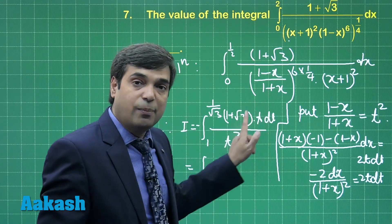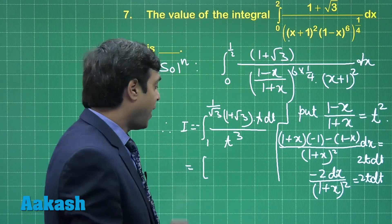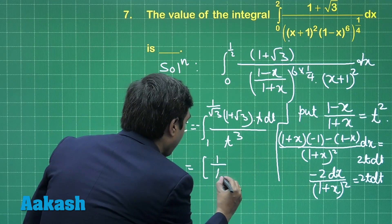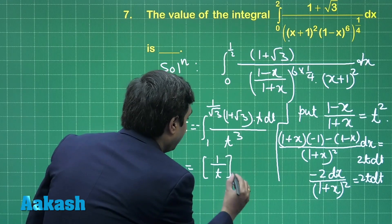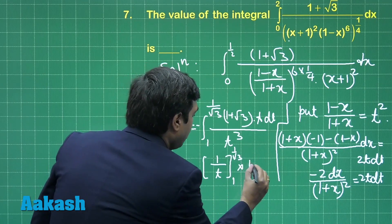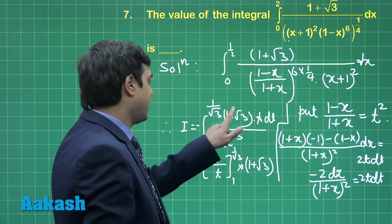t is cancelled, meaning dt upon t square. Its integral is minus 1 by t. Minus is cancelled, so it is 1 upon t under the limit 1 to 1 by root 3. The term 1 plus root 3 is already there in multiplication as it was written here.